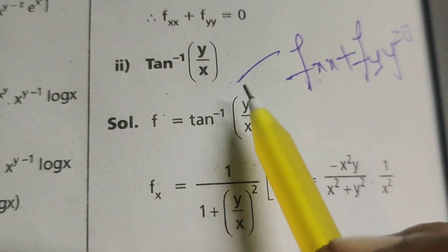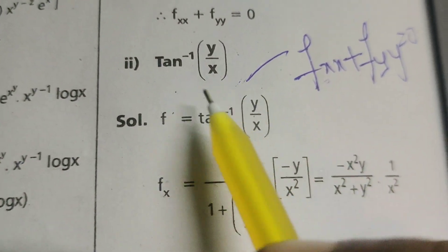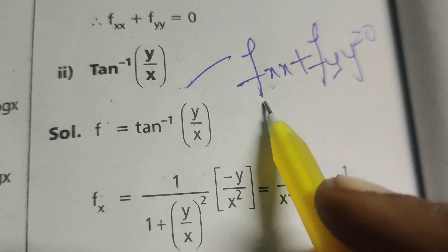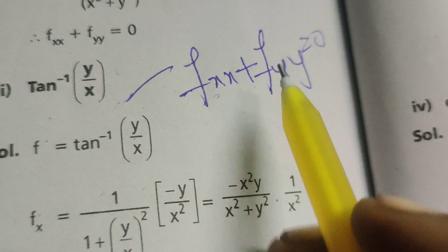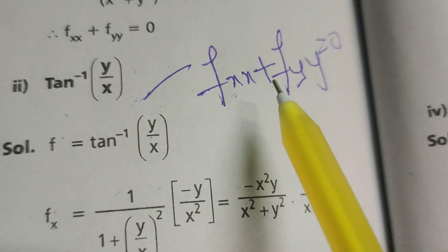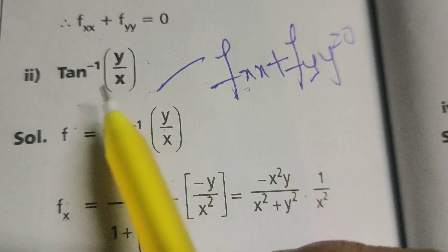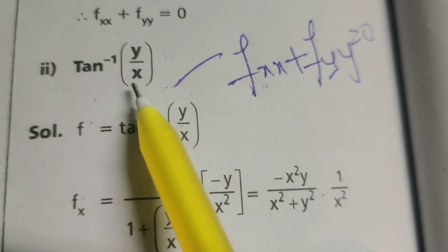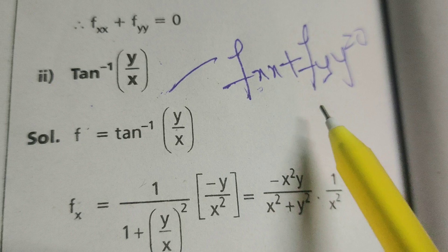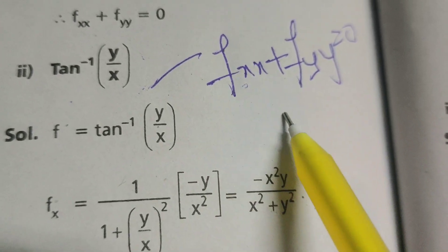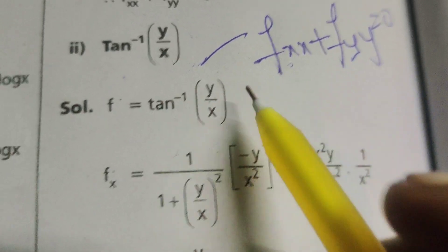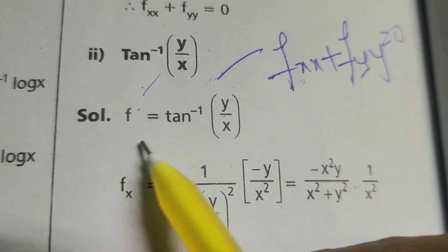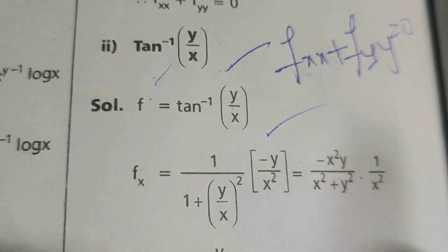This is Dr. Aiti. Today we are going to find the derivative of this function and also verify the second order derivative with respect to x and the second order derivative with respect to y in the given function, satisfying the condition fxx plus fyy equals zero. The given function is f equals tan inverse of y by x.